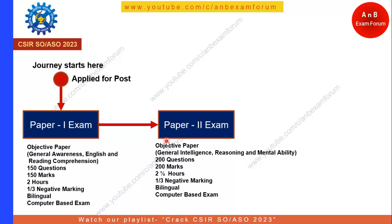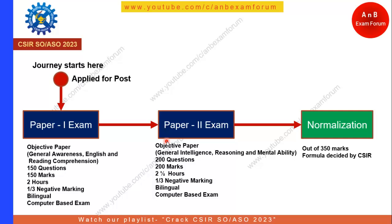Once your Paper 1 and Paper 2 exams are over, there will be normalization. As you know, whenever an exam takes place in different shifts, the difficulty level might differ. So normalization is a must in that case. The formula will be decided by CSIR and notified in due course. This normalization will take place on 350 marks — Paper 1 is 150 and Paper 2 is 200, making a grand total of 350.